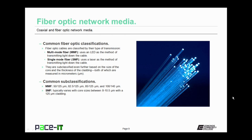For MMF, the common subclassifications are 50-125 and 62.5-125. The classification for single mode fiber typically varies with the core size, with core sizes ranging from 8 to 10.5 micrometers, and it usually comes with 125 micrometer cladding.